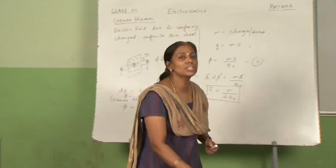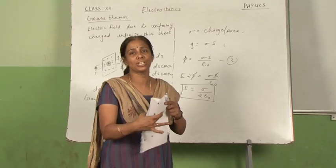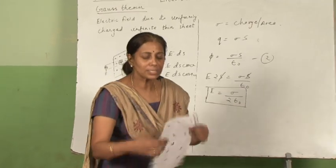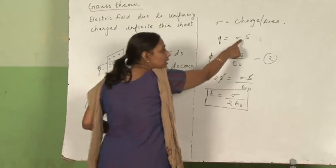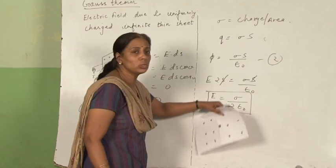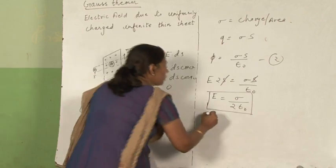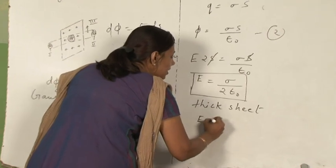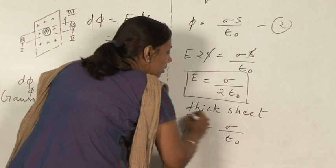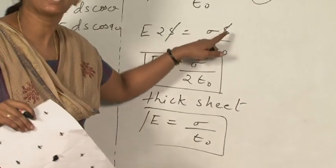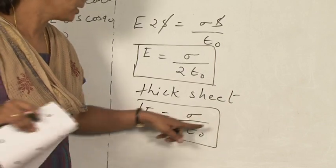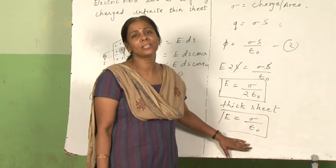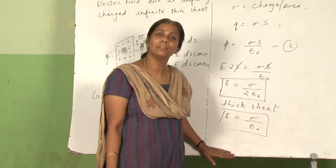This was for a very thin sheet. If it is a thick sheet, the total area enclosed will be σ·2S. So this 2 and 2 cancel, and for a thick sheet you get E = σ/ε₀. We also note that the electric field is independent of the distance — at any point the electric field will be the same.